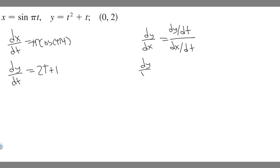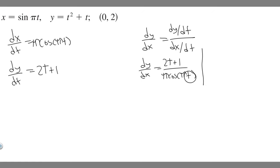Now we can just plug it in. On top we have dy/dt, which is 2t + 1, over dx/dt, which is π·cos(πt). So now we've got dy/dx = (2t + 1) / (π·cos(πt)). What we need to do next is find the slope by plugging in the t value.